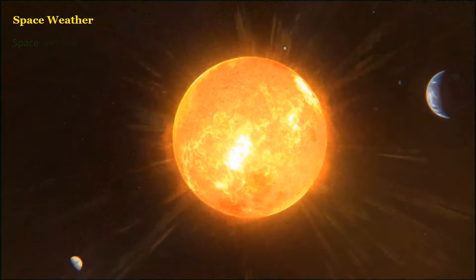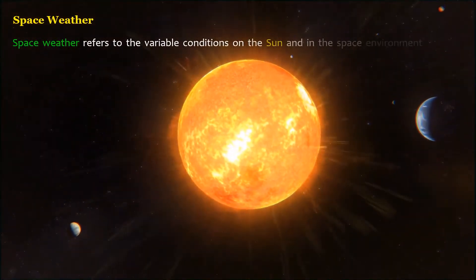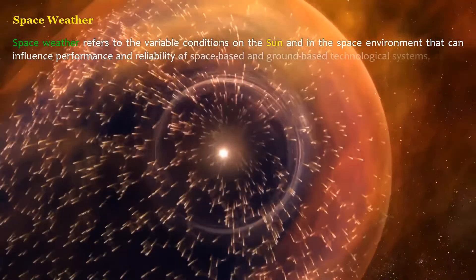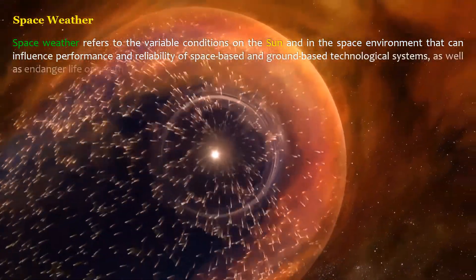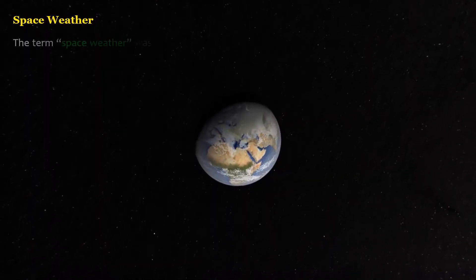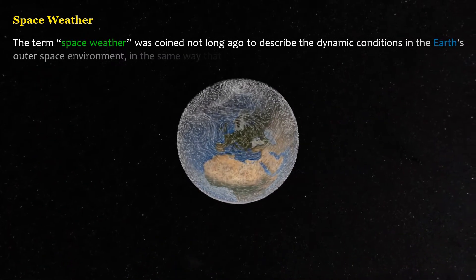Space weather refers to the variable conditions on the sun and in the space environment that can influence performance and reliability of space-based and ground-based technological systems, as well as endanger life or health. The term space weather was coined not long ago to describe the dynamic conditions in the Earth's outer space environment.